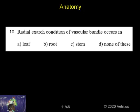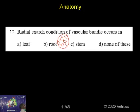The correct answer is the root. In the root, the vascular bundles have xylem and phloem on different radii — these are called radial bundles. Protoxylem is towards the outside, which is called the exarch condition, and this can be found in roots.